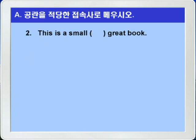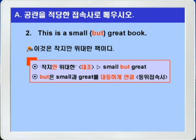2번입니다. This is a small, blank, great book. 접속사 and를 넣으면 '이것은 작고 위대한 책이다'로 어색합니다. '작지만 위대한 책이다'가 되어야 하므로 blank에는 대조를 나타내는 접속사 'but'이 들어가면 되겠습니다. small but great.